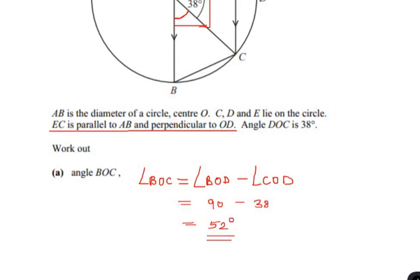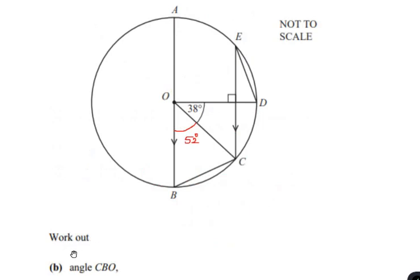Now let us find out part B of this question: work out angle CBO. We are supposed to find angle CBO. Let us consider triangle BOC. Triangle BOC is an isosceles triangle because side OB is equal to side OC, as they are the radii of the same circle.